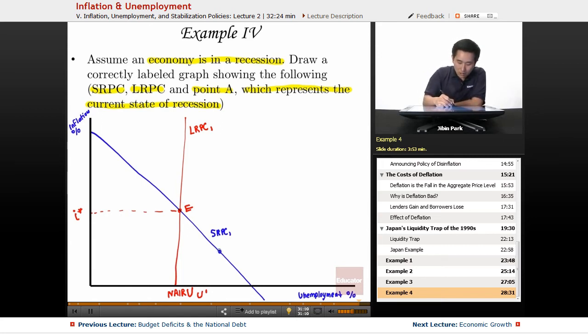So obviously it'd be the right side. So this would be point A. So if they're looking for a point that could represent the economy in a state of recession, it would be point A, because inflation would be relatively low.